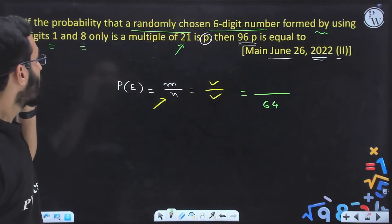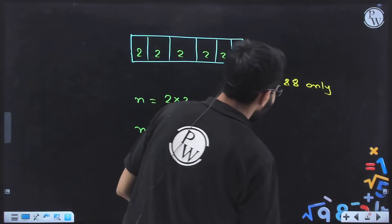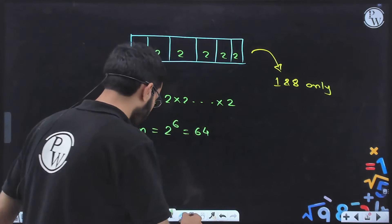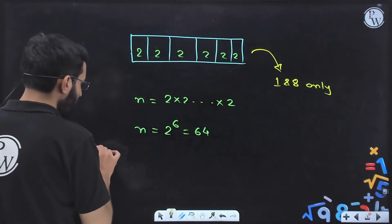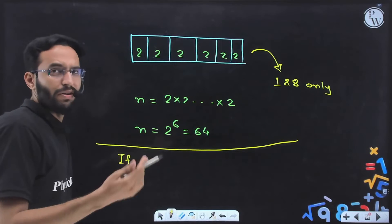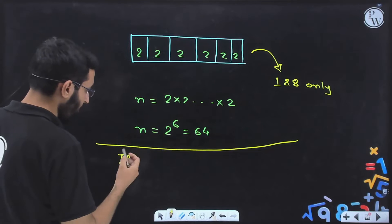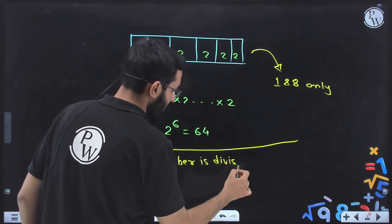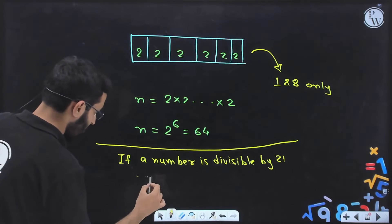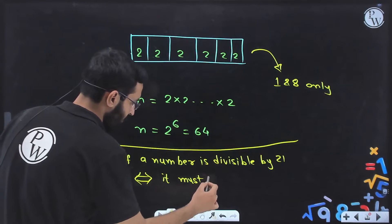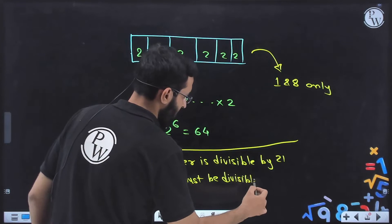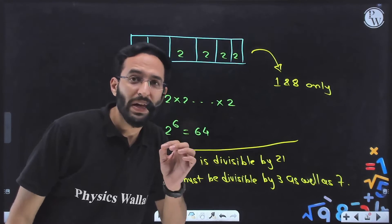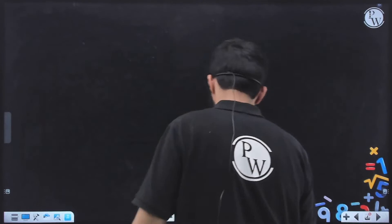Now to finish this question we require the favorable number of outcomes — those numbers which are multiples of 21. From these 64 numbers we have to find how many are multiples of 21. To check if a number is divisible by 21, since 21 is not a prime number, a number divisible by 21 must be divisible by 3 as well as divisible by 7.